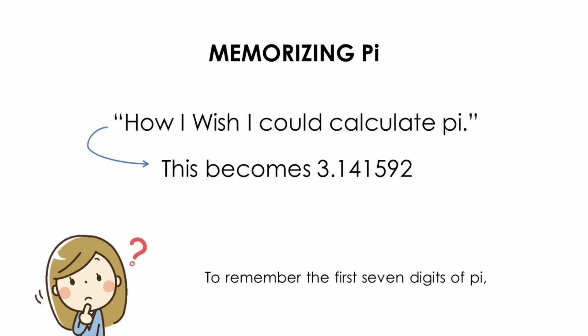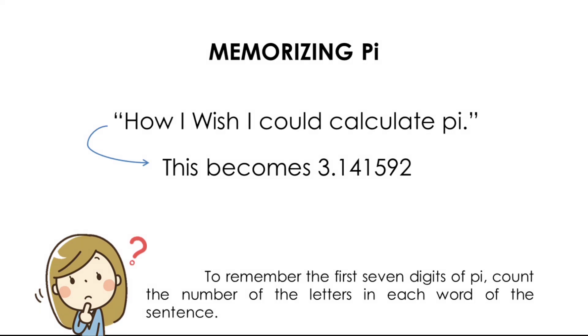Trivia for the day. Memorizing pi. To remember the first 7 digits of pi, count the number of the letters in each word of the sentence: How I wish I could calculate pi. This becomes 3.141592.